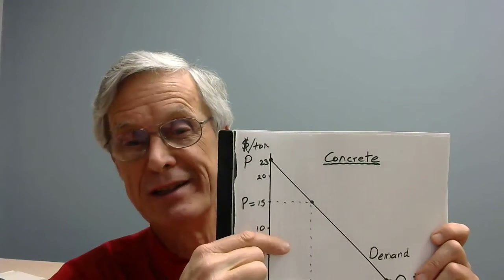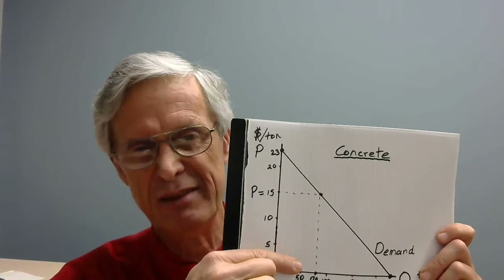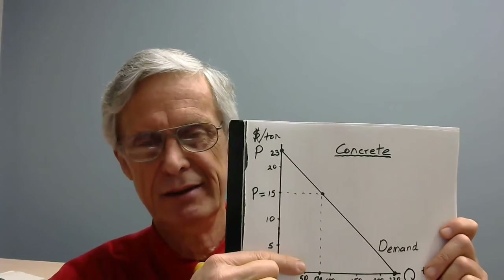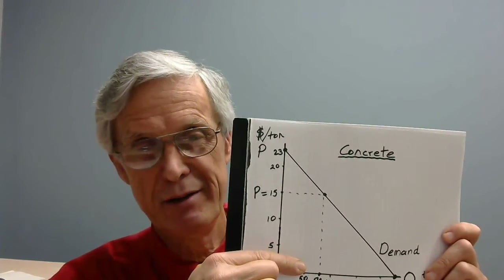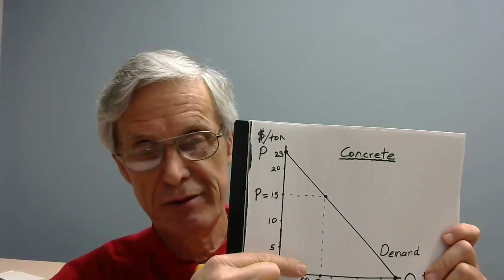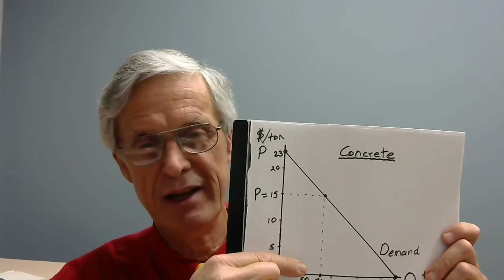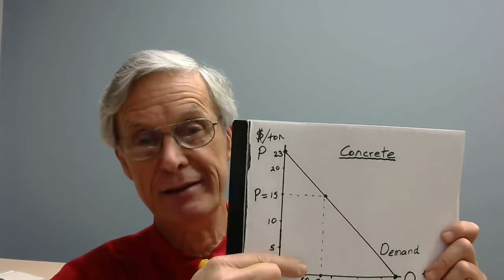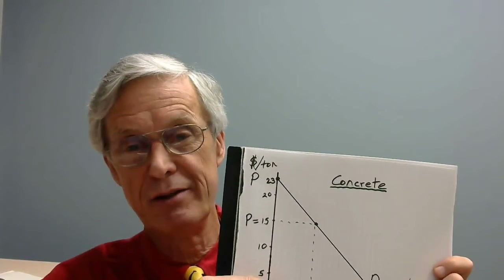Or if we have a certain quantity and need to sell all of it, the demand line tells us the maximum price we can charge and still sell all of it. For example, if we have 80 of something perishable — like a newspaper that's worth nothing tomorrow — go up to the demand line. That's why a demand line is a nice thing to know, and potentially worth paying someone to collect data and estimate, so you know exactly how much you can charge for a given amount.